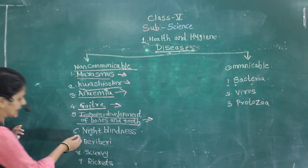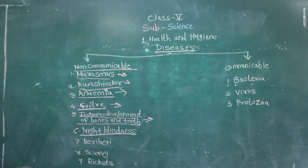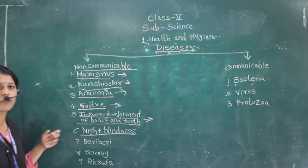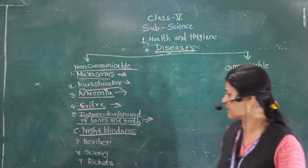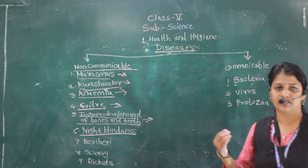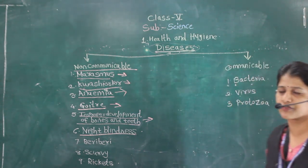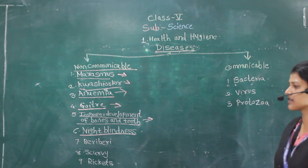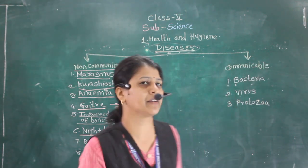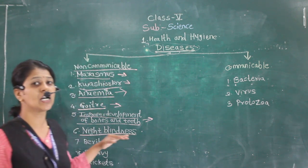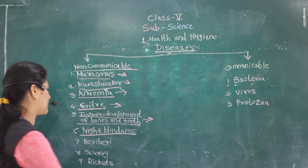Next is night blindness, caused due to the lack of vitamin A. The person cannot see in dim light and is unable to see when the light is dim. That is called night blindness. The person should be given leafy vegetables.